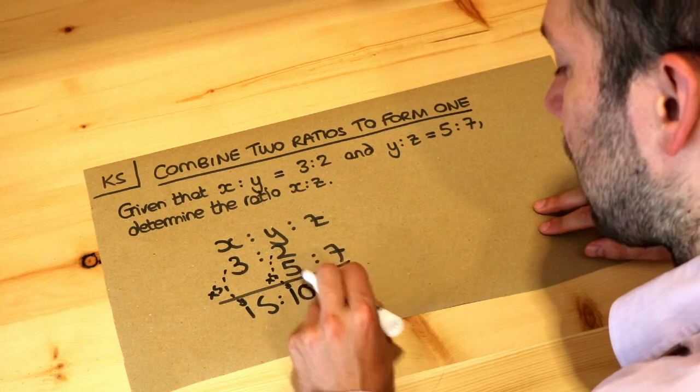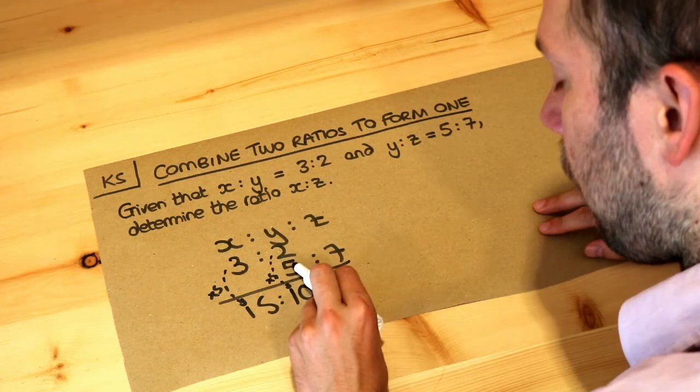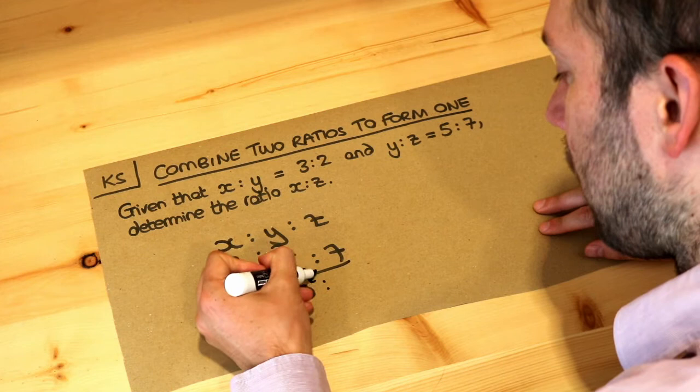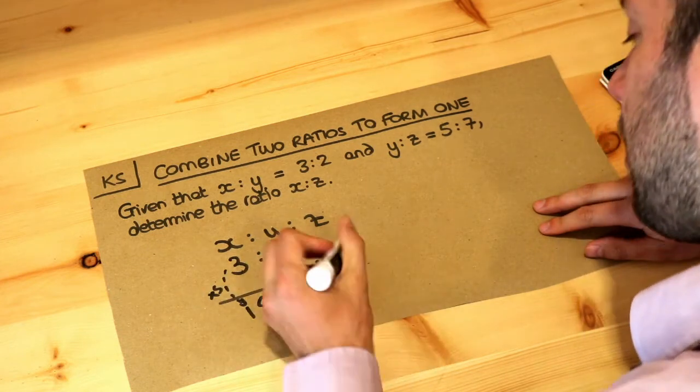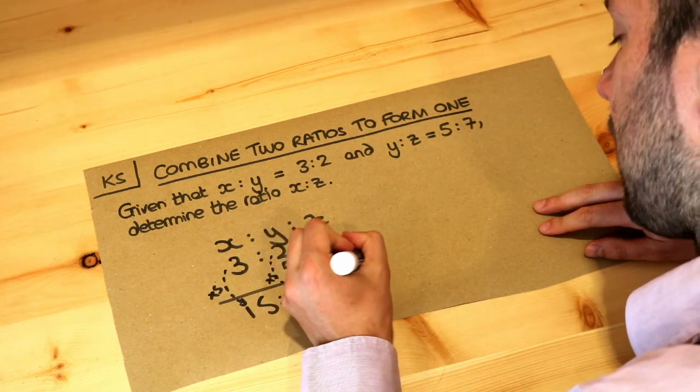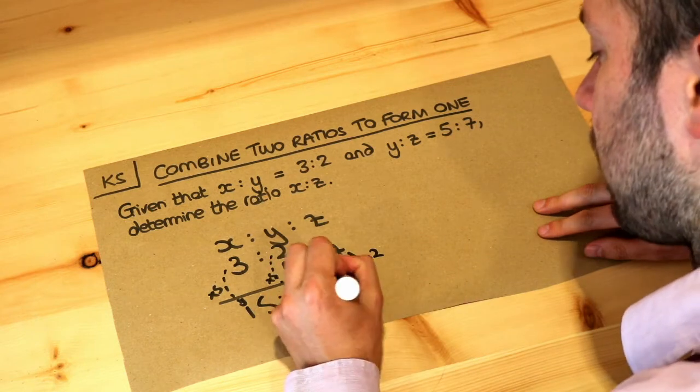And then what about 5 to 7? That's the same as 10 to what? Well, the 5 seems to have got twice as big to get from 5 to 10, so the 7 has to do the same. It needs to get twice as big to get to 14.